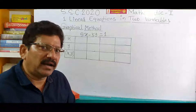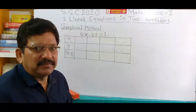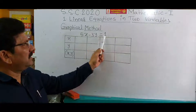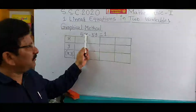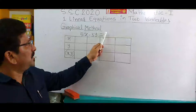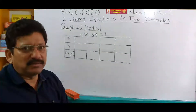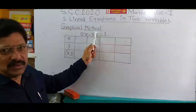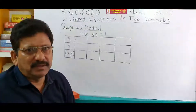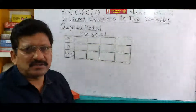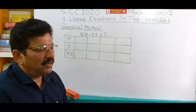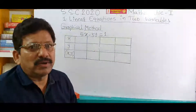But students, every time this trick does not work. For example, here is the equation 5x minus 3y is equal to 1. If you put x equal to 0, this whole term becomes 0 and the value of y is minus 1 upon 3, which is very difficult or impossible to plot. If you put y equal to 0, the value of x becomes 1 upon 5, which is also difficult to plot. So how do you solve this equation and find the 4 ordered pairs? First of all, convert this equation into the form y is equal to mx plus c.